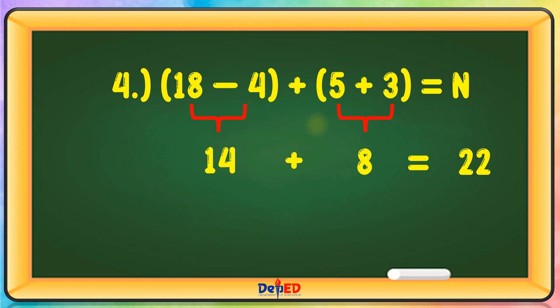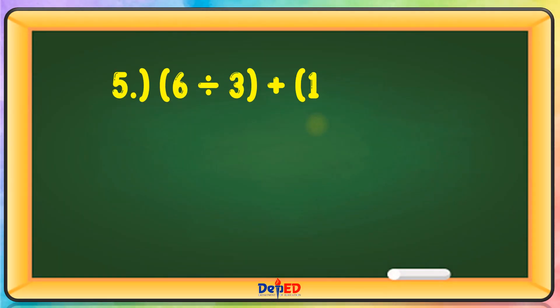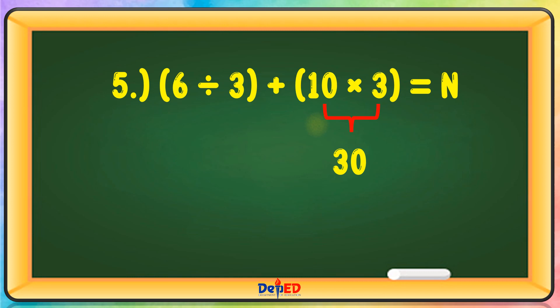N is equal to 22. Next problem: 6 ÷ 3 + 10 × 3 = N. Let us first multiply: 10 × 3 = 30. Then 6 ÷ 3 = 2. Then 2 + 30 = 32. N is equal to 32.